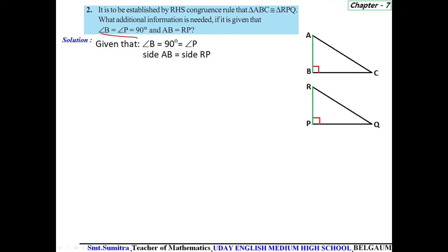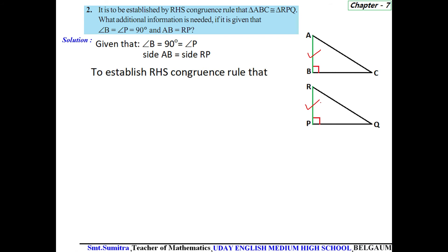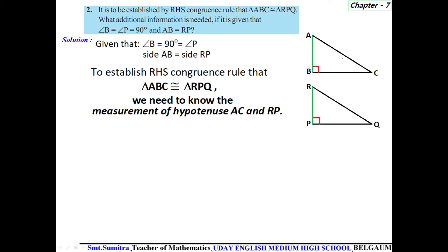Given that angle B equals angle P — both are 90 degrees — and side AB equals side RP, if we want to establish RHS congruence to prove triangle ABC is congruent to triangle RPQ, then what else do we need? We need to know the measurement of hypotenuse AC and hypotenuse RQ.